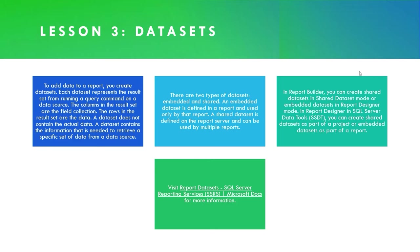Each dataset represents the results set from running a query command on a data source. The columns in the results set are the field collection; the rows are the data. A dataset does not contain the actual data — it contains the information needed to retrieve a specific set of data from a data source. There are two types of datasets: embedded (defined in a report and used only by that report) and shared (defined on the report server and usable by multiple reports). In Report Builder you can create shared datasets in shared dataset mode, and in Report Designer via SQL Server Data Tools you can create shared or embedded datasets as part of a project.